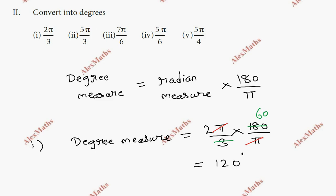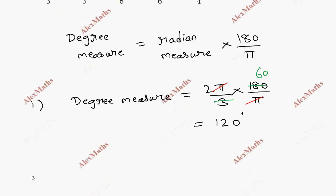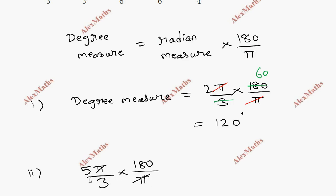Second subdivision: 5π/3. So 5π/3 into 180/π. The π cancels. 180 divided by 3 equals 60. So 5 times 60 equals 300 degrees.